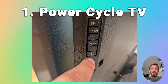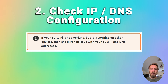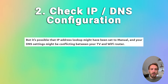If that doesn't help and Wi-Fi is not working on your TV but is working on other devices, check for an issue with your TV's IP and DNS addresses. Your TV should be set up to automatically select an IP address from your router and automatically pull a DNS address. It's possible the IP address lookup has been set to manual and DNS settings could be causing a conflict. Go into your network settings on your TV and check that the IP setting is set to get automatically — if it's on manual, change it to automatic and restart your TV.